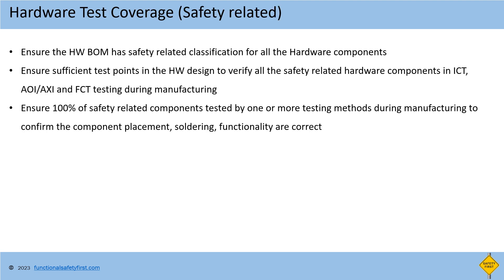Onward test coverage for safety related items: there are multiple test methods — ICT (In-Circuit Testing), AOI (Automated Optical Inspection), AXI (Automated X-Ray Inspection), and FCT (Functional Testing) — used at different stages in manufacturing. These verify all components populated during PCB assembly, including safety related components. The hardware BOM shall classify safety and non-safety related components and be used in the manufacturing hardware test coverage report. Additionally, ensure sufficient test points are available in the hardware board to verify all safety related hardware components in manufacturing using ICT, AOI, AXI, and FCT testing. Ensure 100% of safety related components are tested by one or more testing methods during manufacturing to confirm component placement, soldering, and functionality are correct.